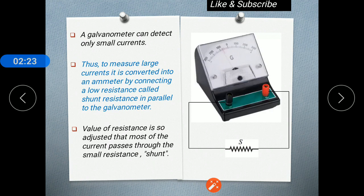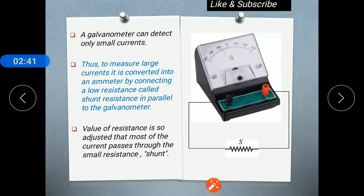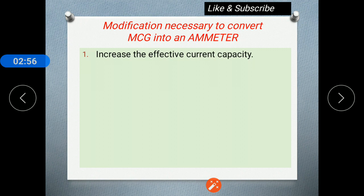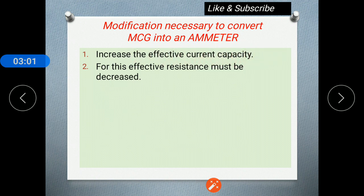To measure large current, we have to modify the galvanometer as an ammeter. To modify it, we connect one shunt resistance — a low resistance — in parallel to the galvanometer, and this arrangement is called an ammeter. The first modification necessary is to increase the effective current capacity, since the current capacity of the galvanometer is very small, that is 1 mA. We increase the current capacity by decreasing the effective resistance across it.